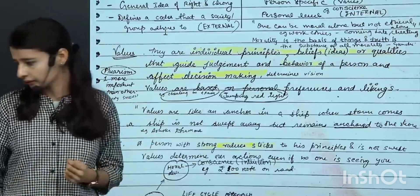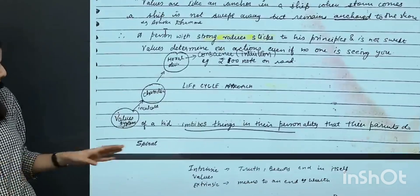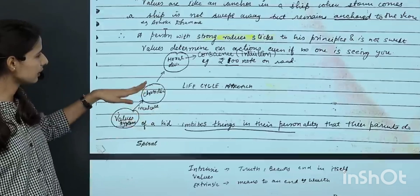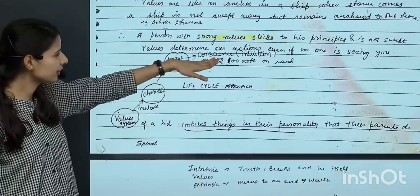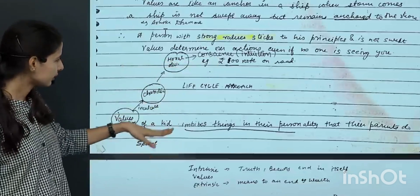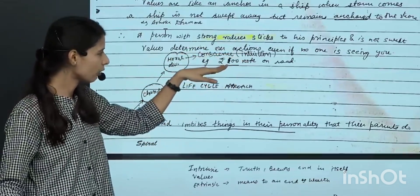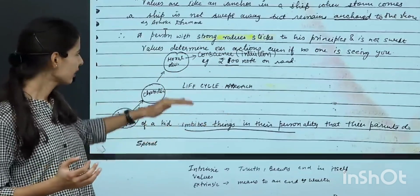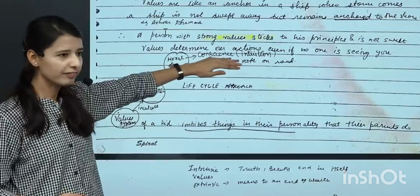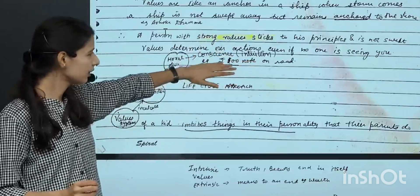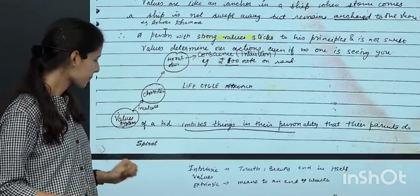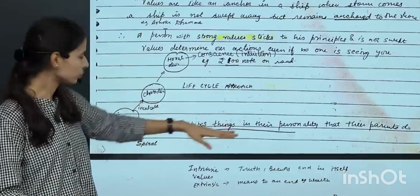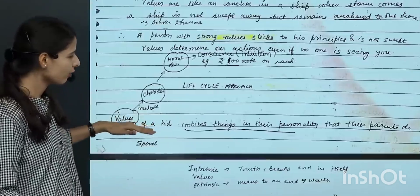I wrote a small framework — a basic flowchart — that values build character, and character leads to moral development, which finally turns into the conscience of a person. I scribble this along with my notes. Like, if someone has found a hundred rupee note on a road, then their conscience will understand what to do — that is something they will intuitively know. I also wrote that kids imbibe things in their personality that their parents do. So this is a value system example — our parents are our value system.